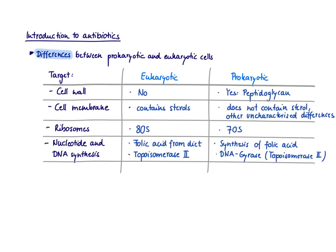Another step in DNA synthesis that we can target is the enzyme topoisomerase 2. Topoisomerase 2 is required to remove the supercoils that form ahead of the replication fork when DNA is being replicated. Eukaryotic cells have topoisomerase 2, and bacteria have this enzyme also. However, there are slight differences that can be targeted. In bacteria, topoisomerase 2 is also often called DNA gyrase, and this slight difference makes it a target for antibiotics.